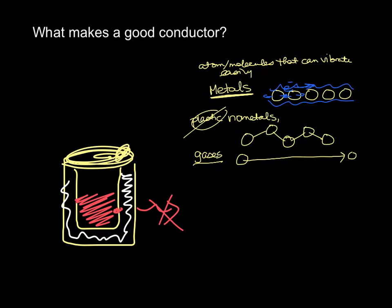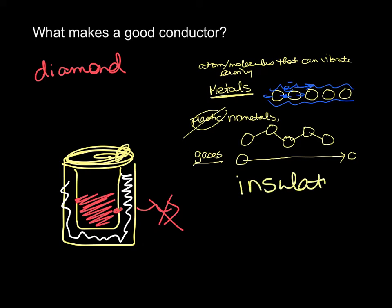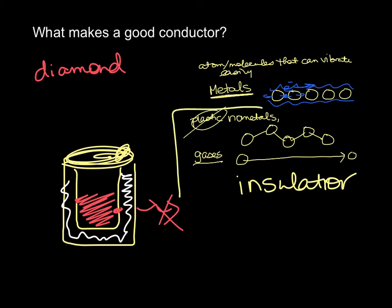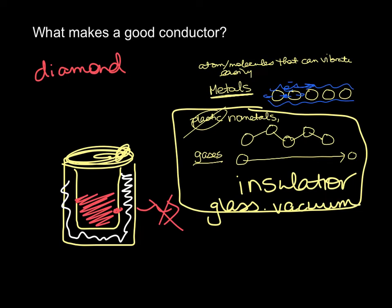Good conductors are metals — metals are our best conductors. Interestingly, diamond is actually the best conductor, which is surprising since it has that regular non-metal structure, but it's a very good conductor. Non-metals like plastic and glass are all poor conductors. A poor conductor is an insulator. If you're looking for a good conductor, you want a metal.